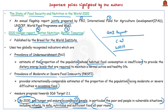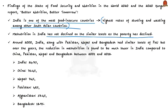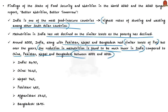Both reports reveal shocking facts about Indian food insecurity and malnutrition. India is one of the most food-insecure countries, with the highest rates of stunting and wasting among South Asian countries. Interestingly, malnutrition in India has not declined at levels comparable to the decline of poverty. In 2000, India along with Pakistan, Nepal and Bangladesh had somewhat similar levels of undernourishment. Over the years, the reduction in malnutrition has been much lower in India compared to China, Pakistan, Nepal and Bangladesh — despite those countries (except China) being economically weaker than India.